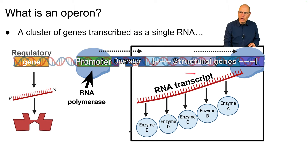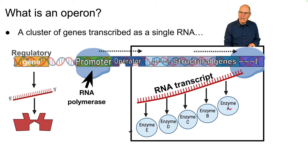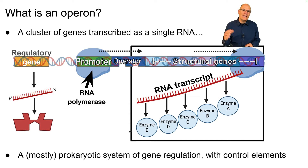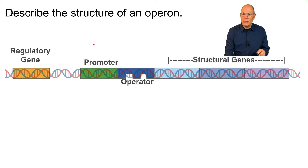One definition is that an operon is a cluster of genes transcribed as a single RNA. Here we have a portion of DNA labeled structural genes, all transcribed as one RNA transcript, but then that RNA is processed so that it's producing a variety of enzymes — a cluster of genes transcribed as a single RNA.